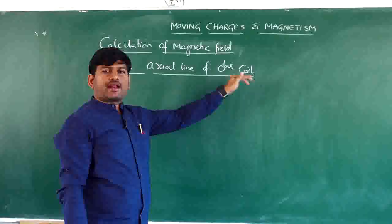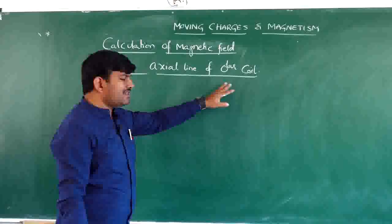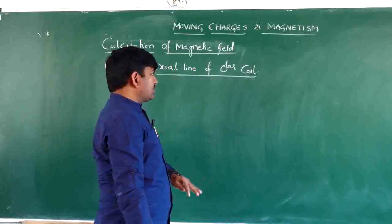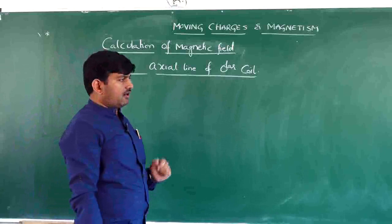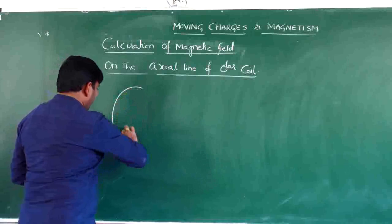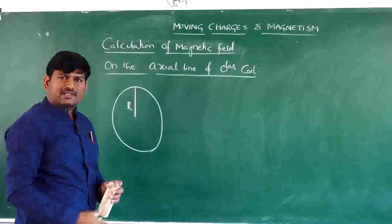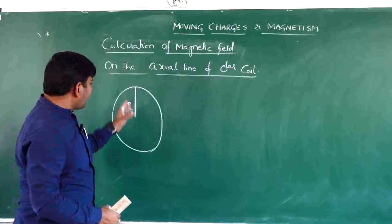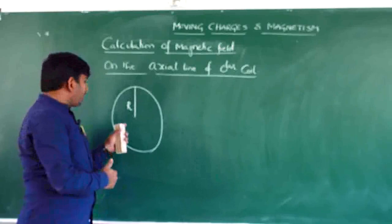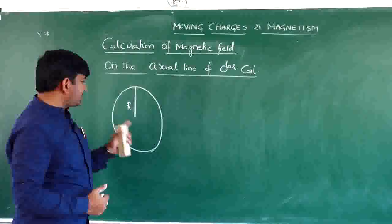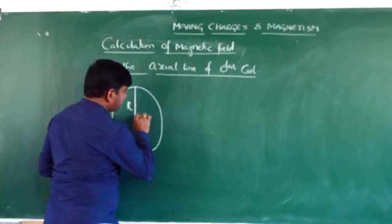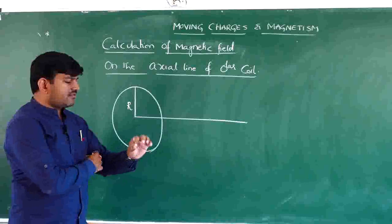Here we are going to calculate the magnetic field on the axial line of a circular current-carrying coil. First, we need to choose a current-carrying coil. Let me choose a circular current-carrying coil whose radius is equal to R. The coil is placed in the yz-plane, and this is the x-axis, which is said to be the axis of the coil.